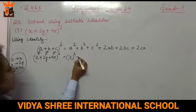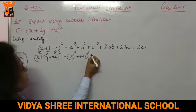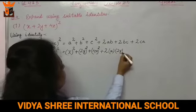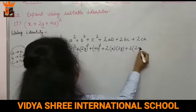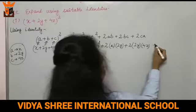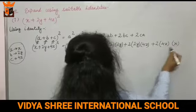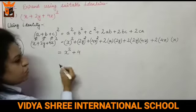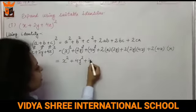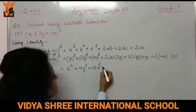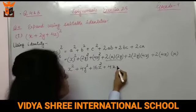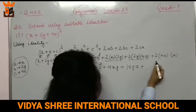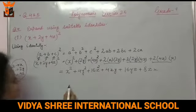Running one by one: a is x, b is 2y, c is 4z. So a² = x², b² = (2y)² = 4y², c² = (4z)² = 16z². For 2ab: 2 × x × 2y = 4xy. For 2bc: 2 × 2y × 4z = 16yz. For 2ca: 2 × 4z × x = 8zx. So the answer is x² + 4y² + 16z² + 4xy + 16yz + 8zx.